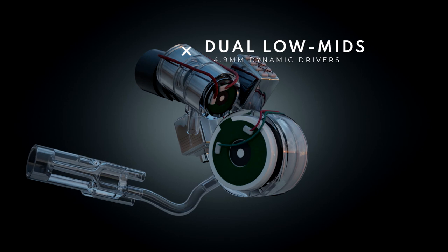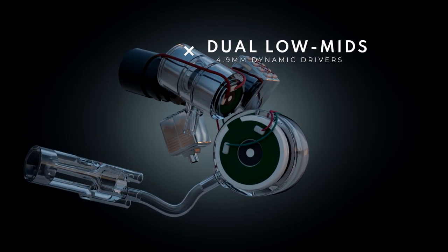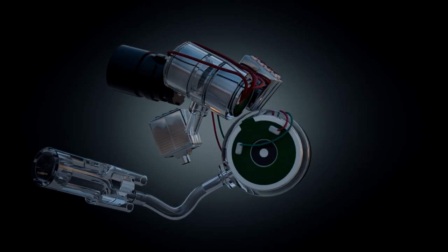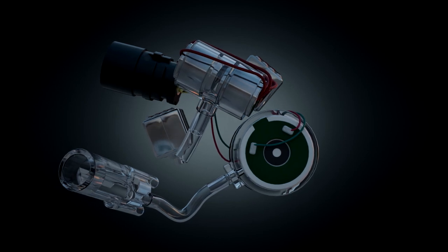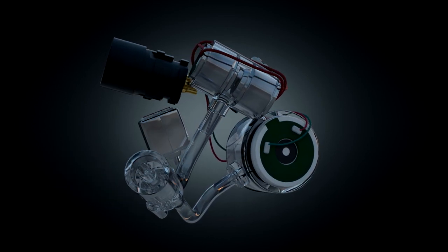The low mids are now two 4.9 millimeter dynamics, similar to what we used in the Lola. The 4.9 millimeter dynamics are very sympathetic with the guitar tone and distortion.